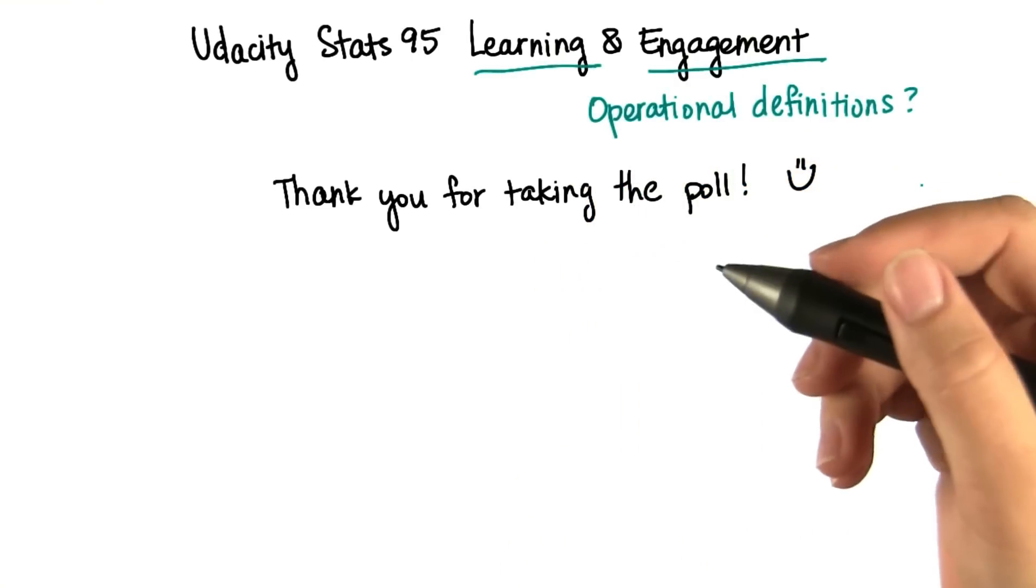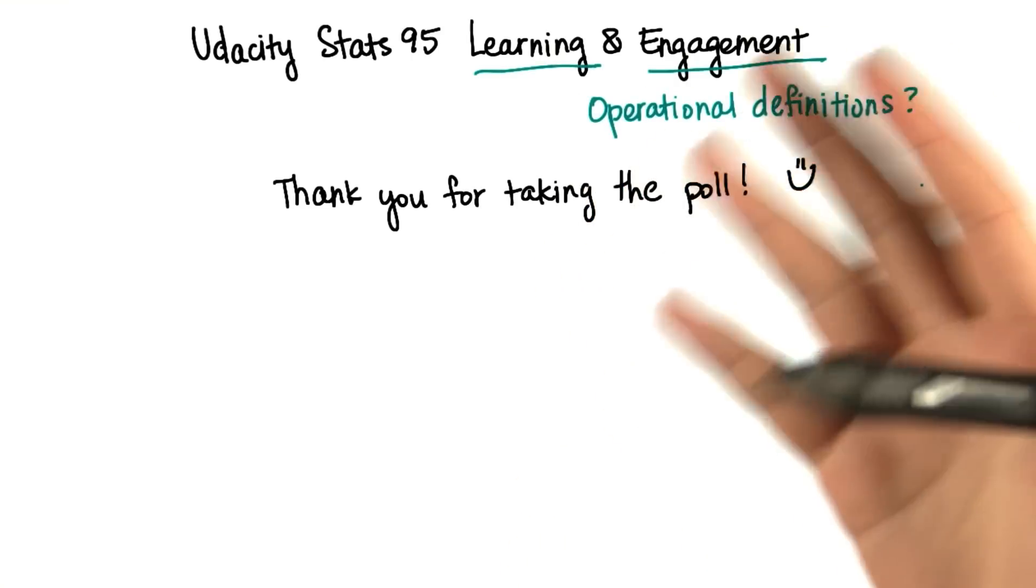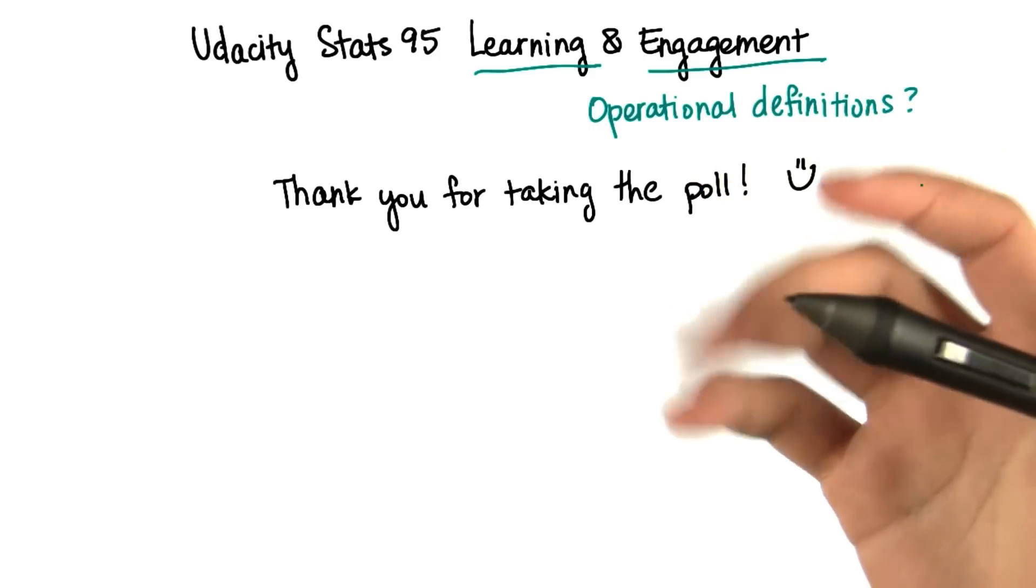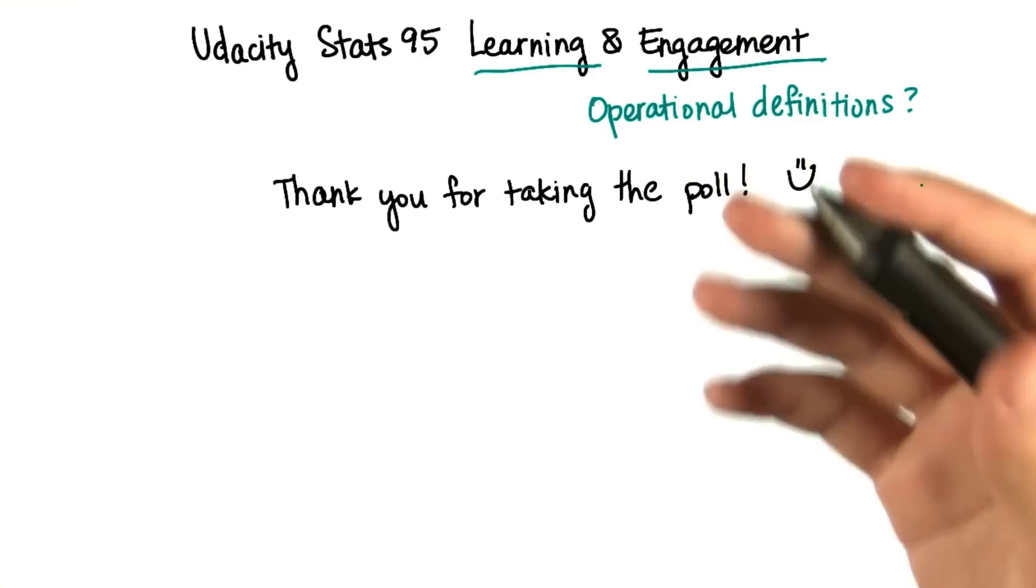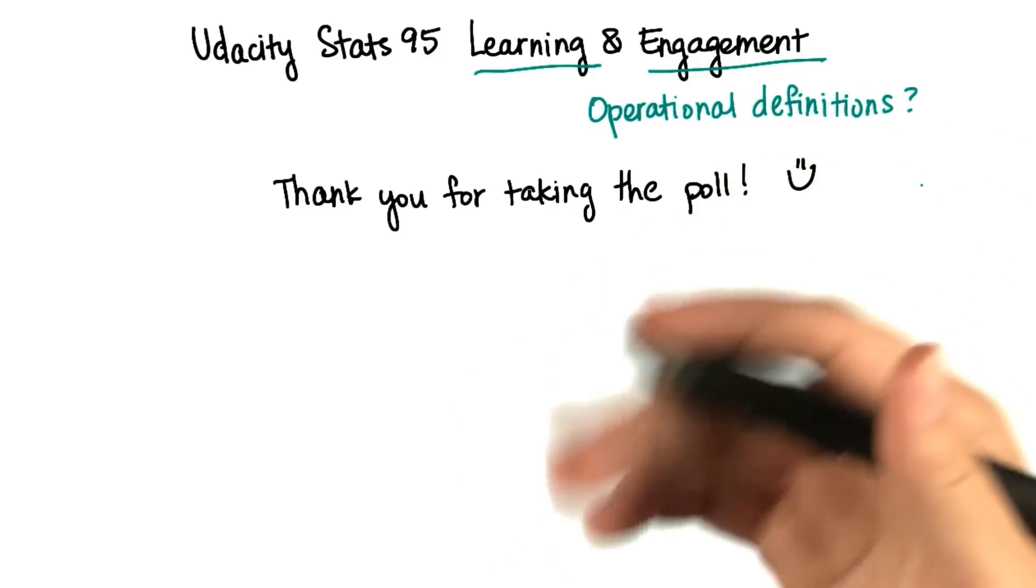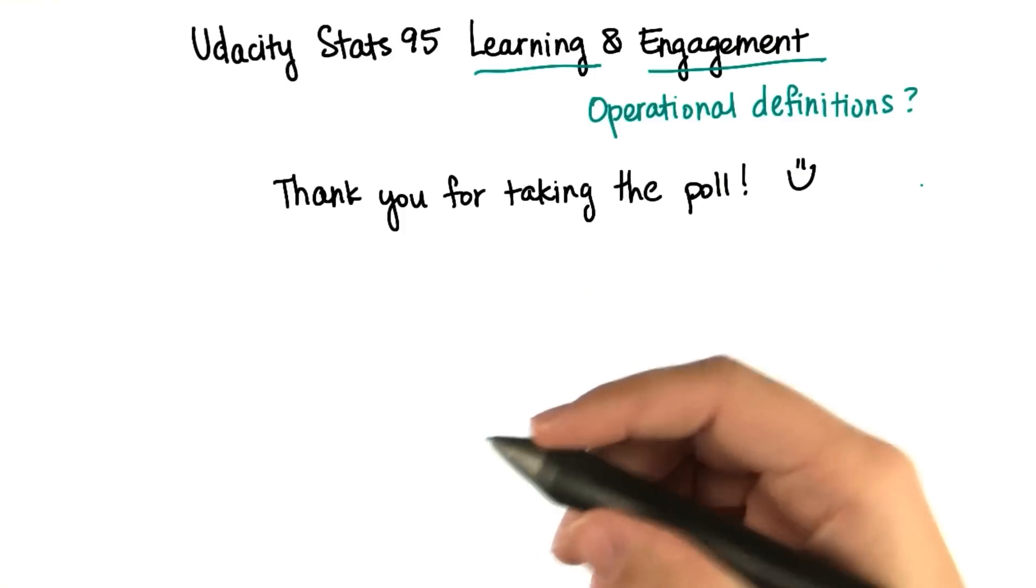For example, if someone has only had time to view one lesson but then life got in the way, their engagement might be one. That doesn't necessarily mean that they didn't enjoy what they were watching. So there are many arbitrary reasons why someone may choose the number they did.